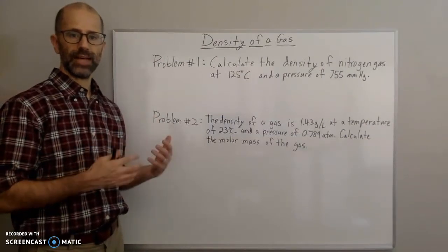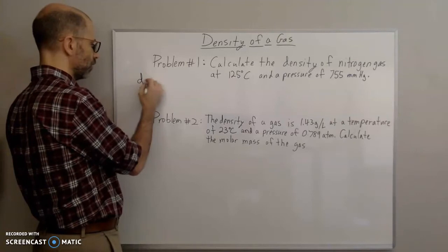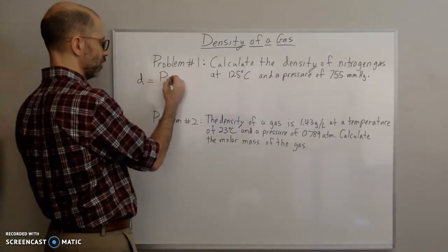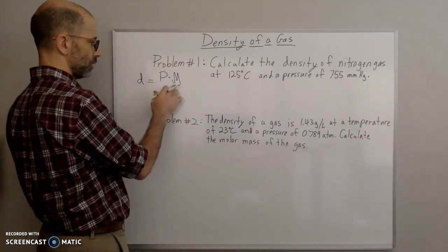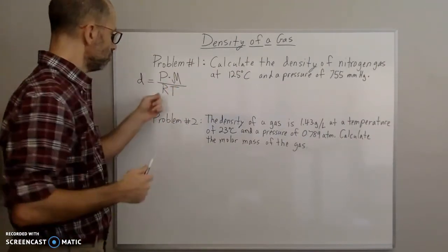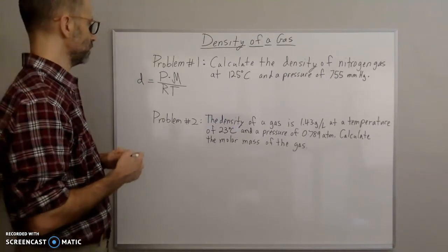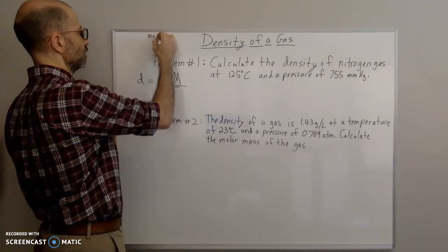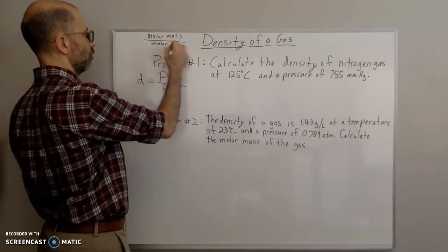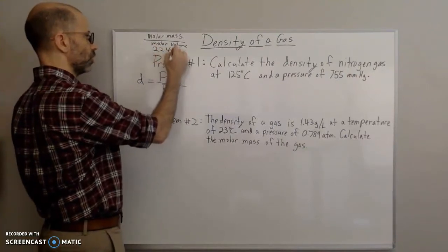In the last video I went over how you can get the density equation of a gas from the ideal gas law. The density of a gas is going to be equal to the pressure times the molar mass — that's my weird M for molar mass — divided by RT. This will work under any conditions for a gas. If you're under STP, then remember it's just the molar mass of the gas divided by molar volume.